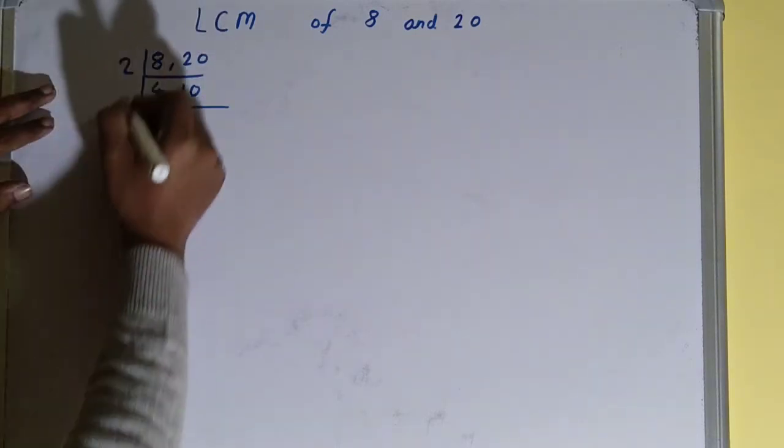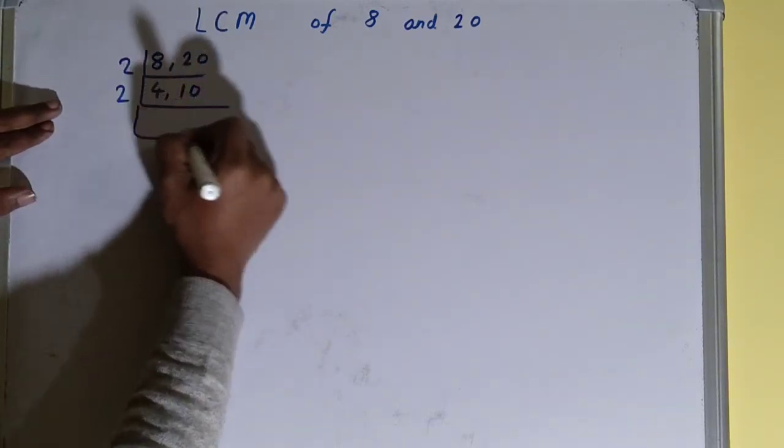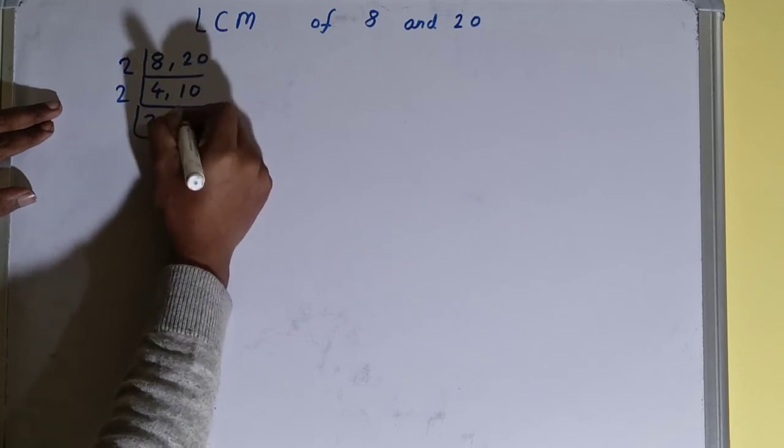Again, if we check, both the numbers are divisible, so we'll divide and we'll be left with 2 and 5.